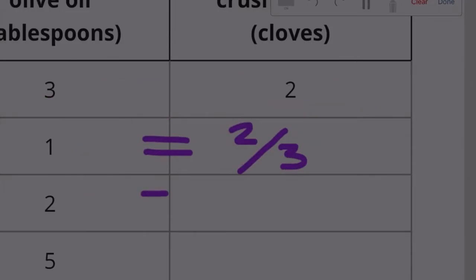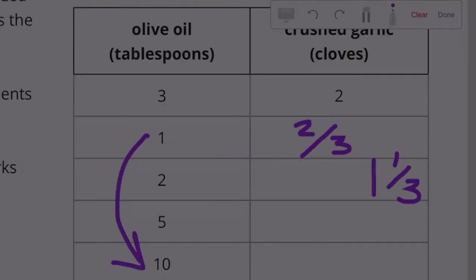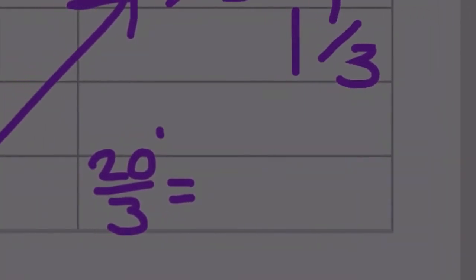If one equals two thirds, then two would be double two thirds, which is four thirds, equal to 4 divided by 3. How many times does three go into four? Once. One times three is three, four minus three is one, so your remainder is one over three, which is one and one third. I'm going to jump down to the 10 because 10 is going to be 10 times bigger than one. What's 10 times bigger than two thirds? 20 thirds.